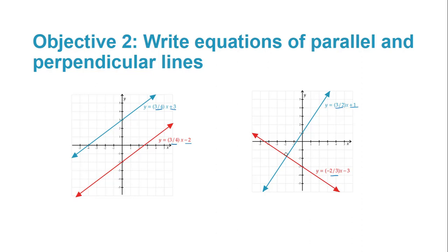These two lines do intersect because they have different steepnesses, and in fact they intersect at a right angle. That is always the case when the slopes are negative reciprocals of each other — one slope is 3/2 and the other is negative 2/3. I'll define this formally on the next screen.